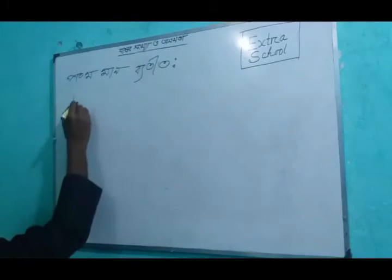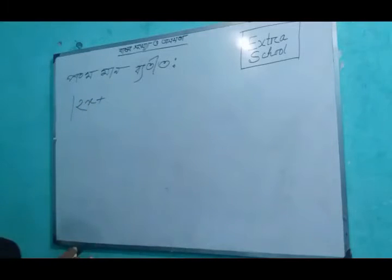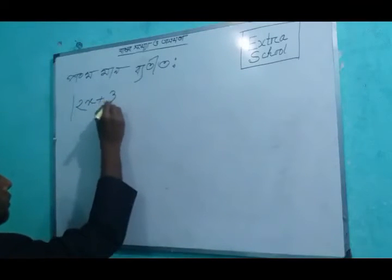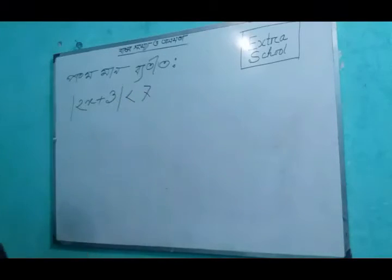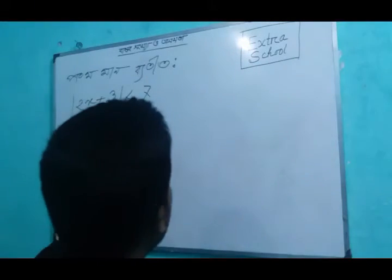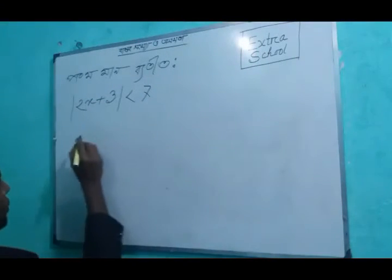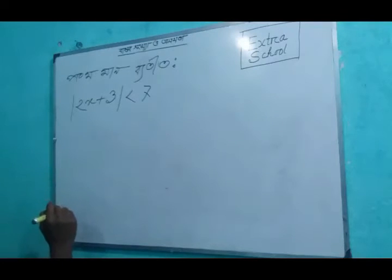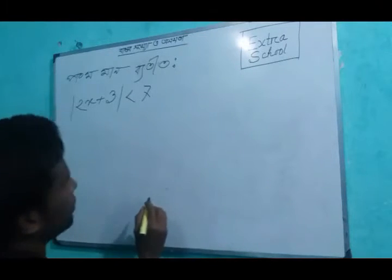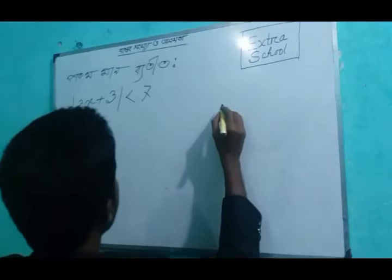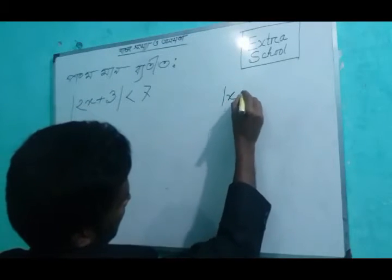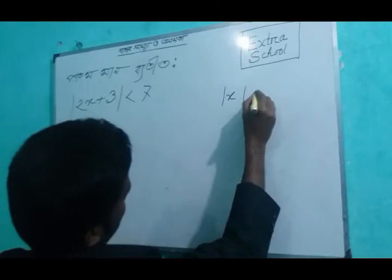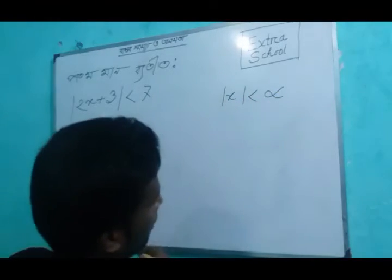Modulus of 26 plus 3, less than 7. Modulus of 27 plus 3 plus 3 plus 4 plus 4 plus 5.